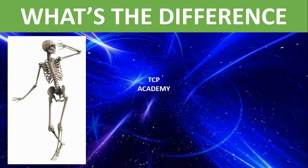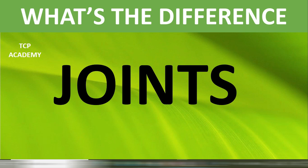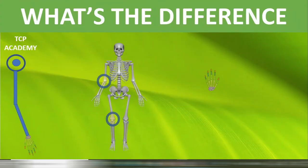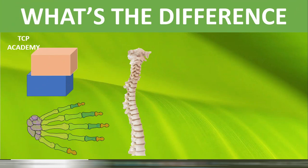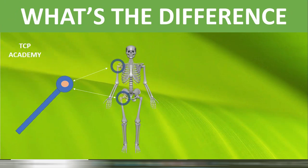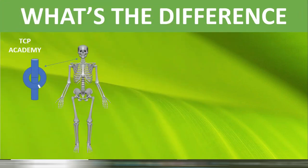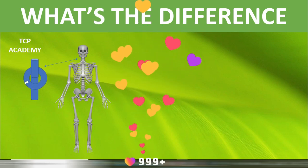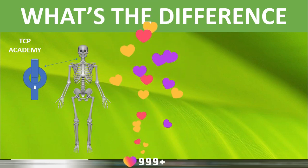Coming up in our next lesson, we are going to be looking at joints, and you should be seeing some of these in the next animation. You can make a judgment as to what type of joint you are seeing in the presentation. This video should be out in short order, so just look at the animation and tell me what you think. Thanks much for watching.